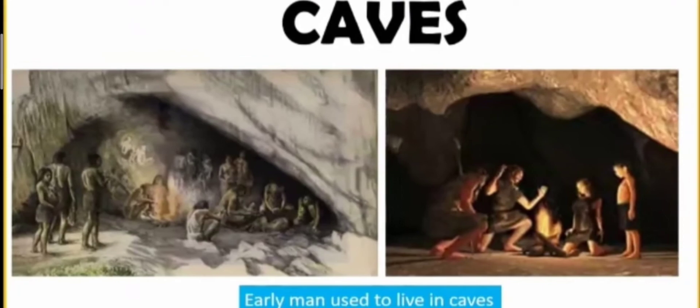Look at this picture. These are caves. Early man used to live in caves. In your fifth chapter on early man, you read that the early man lived in caves. He ate the flesh of animals or fruits, roots and plants. Over a long period of time, early man was a hunter and food gatherer, and after that he became a food producer. He started living in small huts close to his crops. The first home of early man was caves.